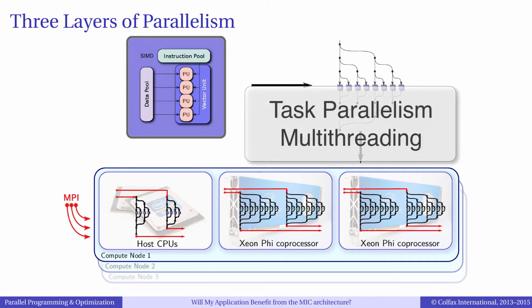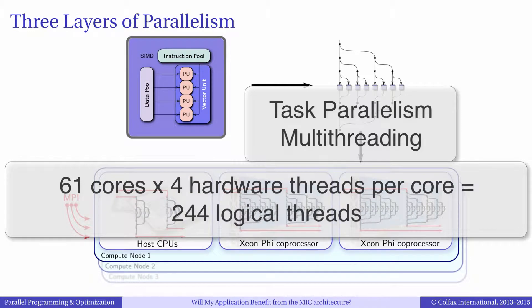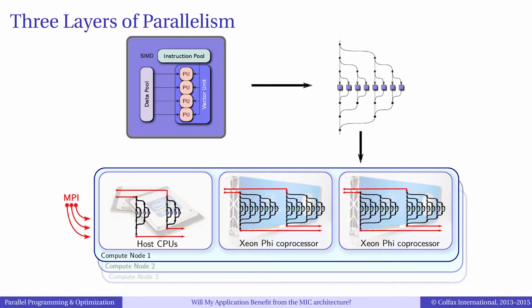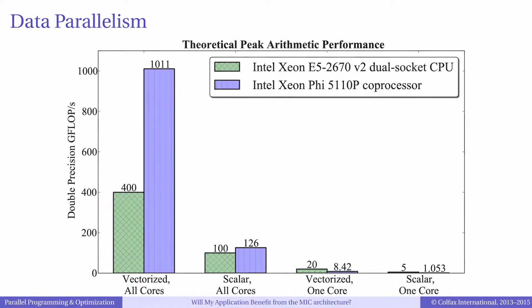Next, let's consider task parallelism, or the usage of multiple cores. Knight's Corner generation Xeon Phi coprocessors have up to 244 threads across 61 cores. So if the application does not have enough parallelism to keep every core busy, a significant portion of the computation power is wasted. Even if the application is fully vectorized but single-threaded, its theoretical peak performance on Xeon Phi is only about 8 gigaflops per second, which is worse than the 20 gigaflops per second on Xeon processor.